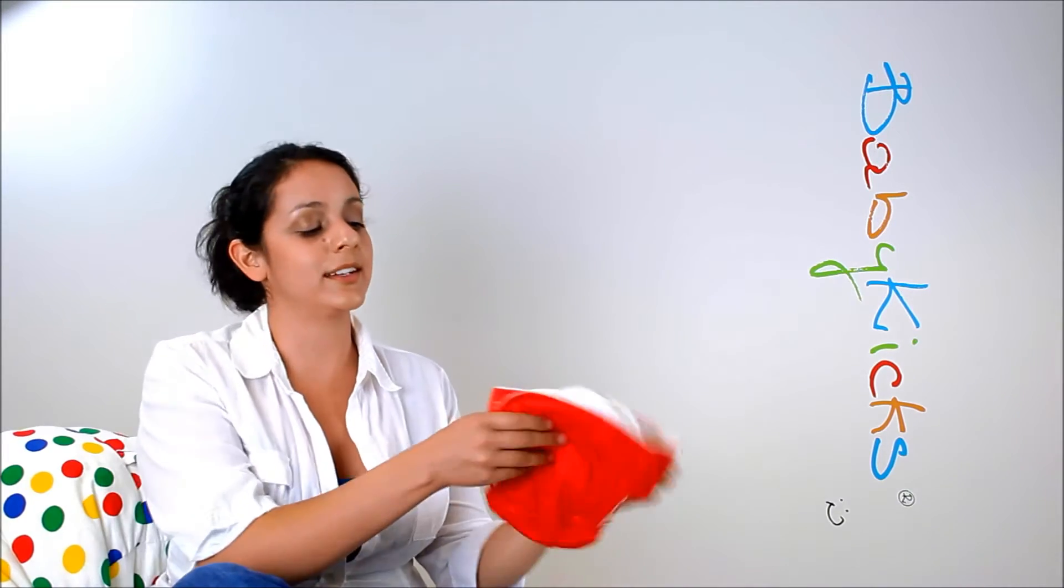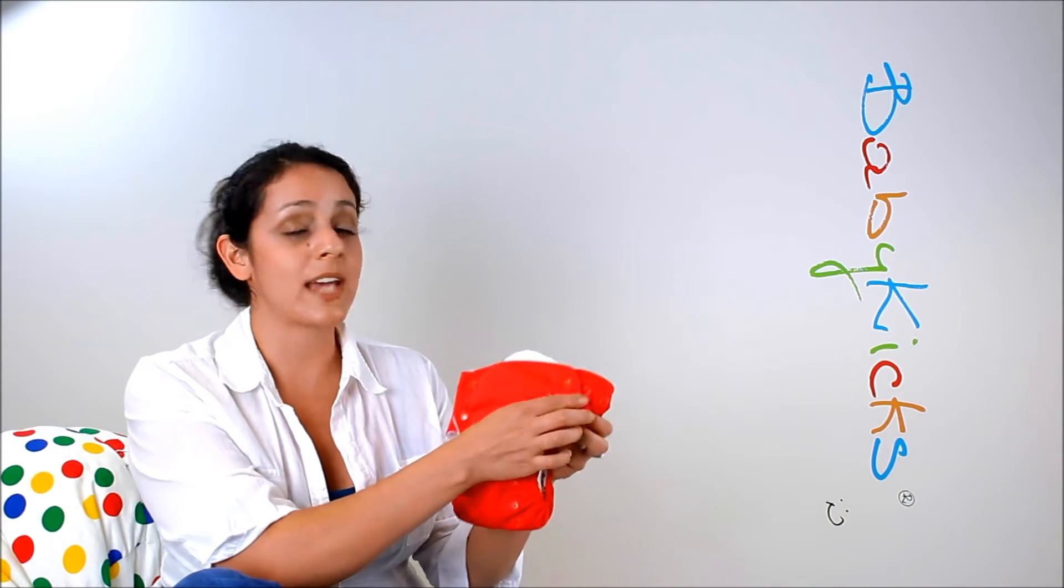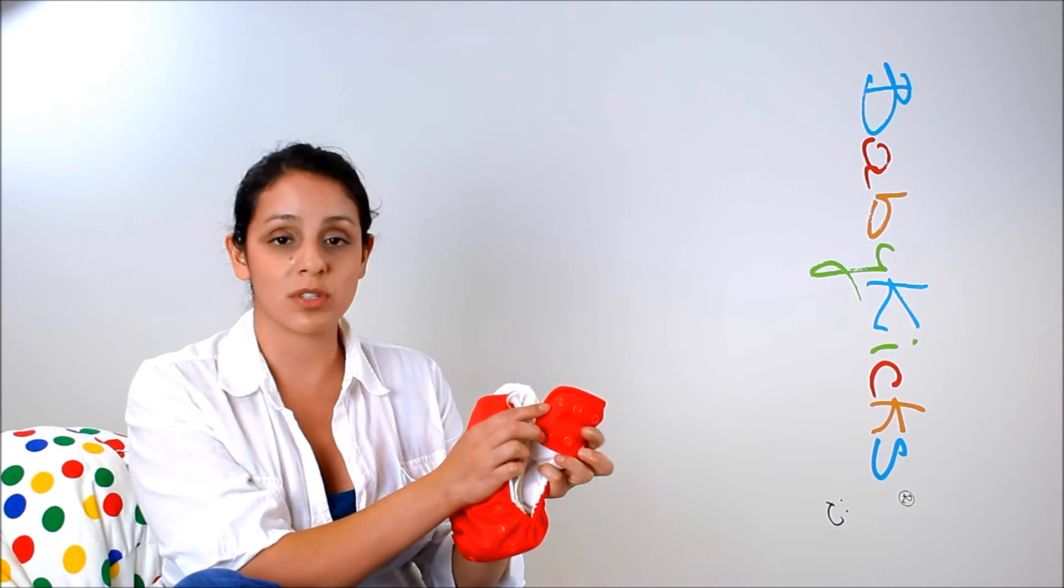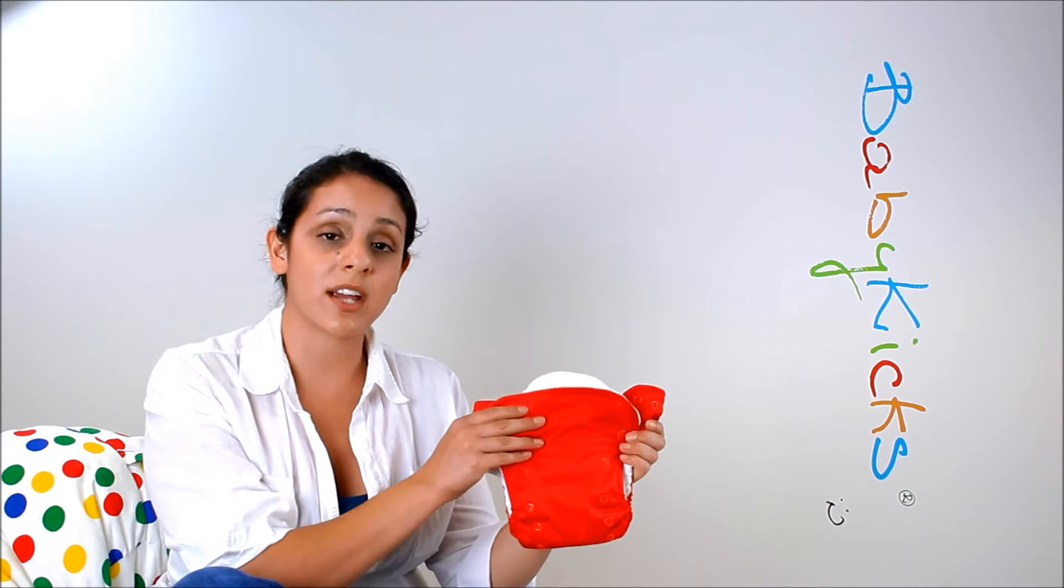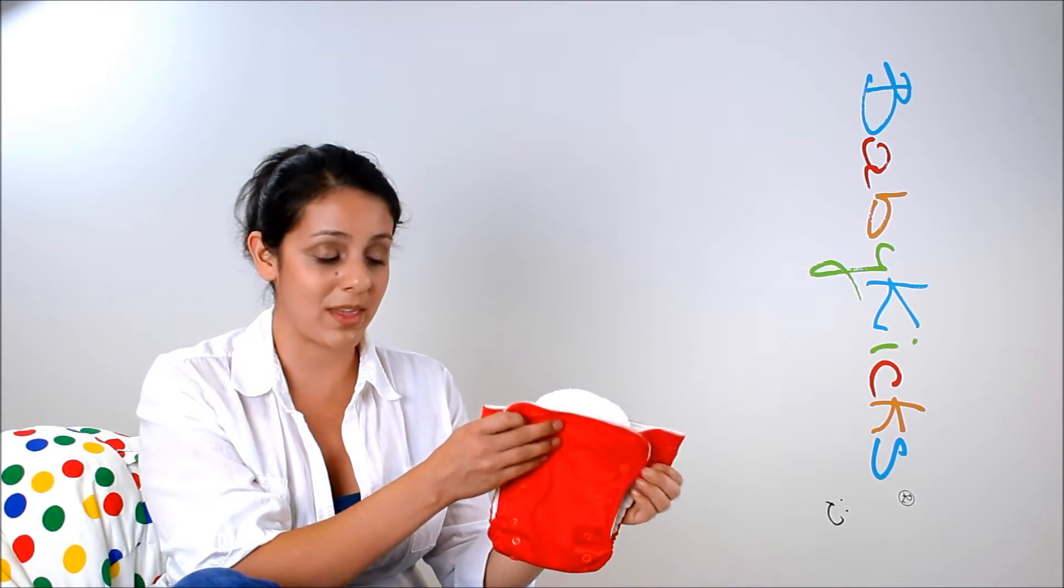It also comes in side snaps which are long lasting. The side snapping version has two rows of snaps, one for the waist and one for the thigh. That way you can get the perfect customized fit for your baby no matter what size and shape they are.